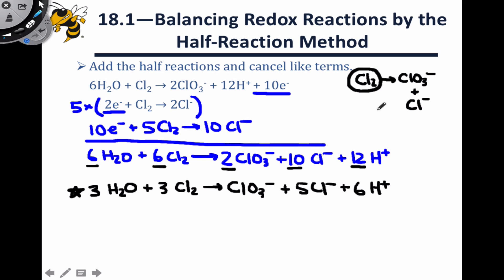We scale the half-reactions so that the number of electrons lost in the oxidation is equal to the number of electrons gained in the reduction, add the resulting half-reactions, and there's our balanced equation. And here we just divided all the coefficients by 2 to get to the equation with the smallest whole number coefficients.